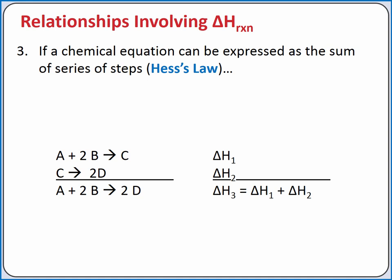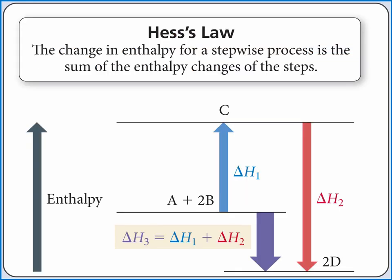This is called Hess's Law. For example, if we add together the reactions A + 2B → C and C → 2D, the overall reaction is A + 2B → 2D. So the change in enthalpy for the overall reaction is the change in enthalpy for the first step plus the change in enthalpy for the second step. Hess's Law works because change in enthalpy is a state function — it doesn't matter the route we take to get from reactants to products.